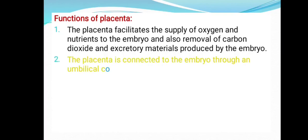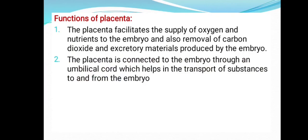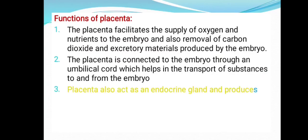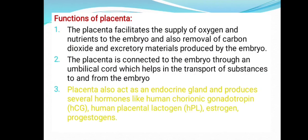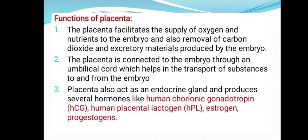The placenta is connected to the embryo through an umbilical cord, which helps in transport of substances to and from the embryo. The placenta also acts as an endocrine gland and produces several hormones like human chorionic gonadotropin (hCG), human placental lactogen (hPL), estrogen, and progestogens.